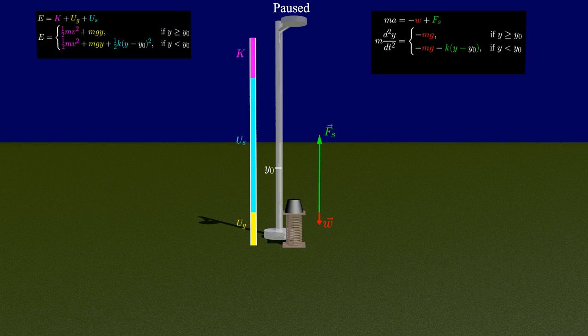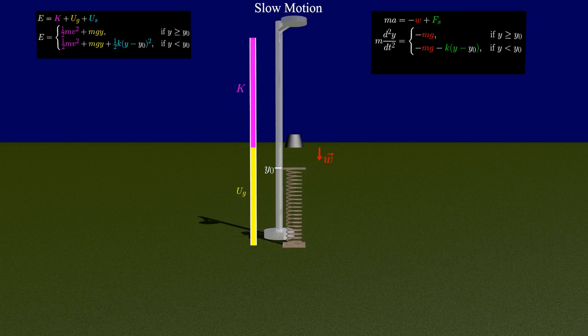There is kinetic energy, which is energy associated with the motion of the mass. Conveniently, the total energy of the system is constant throughout its motion. It just moves energy between the different types, while keeping the same total.